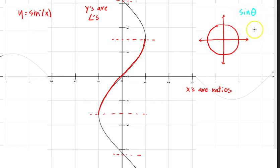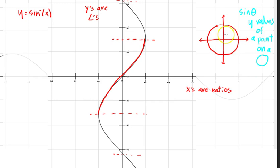Sine of a function is all about the y-values of a point on a circle. If I ask where do the angles have unique ratios — for example, sine of 45 degrees will be root 2 over 2 for this angle, but over here it is also root 2 over 2. So that's no good. I want where sine of θ will give a unique result.